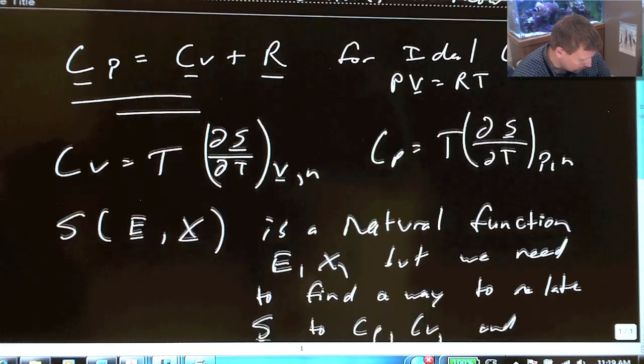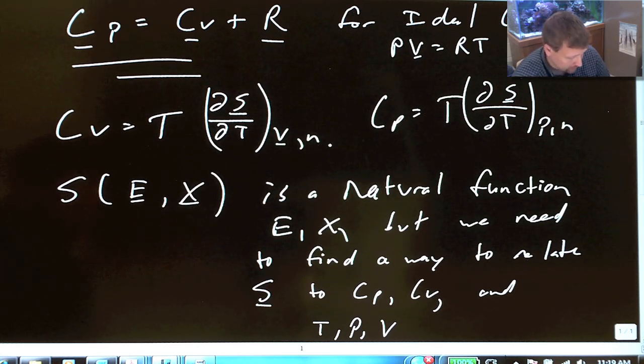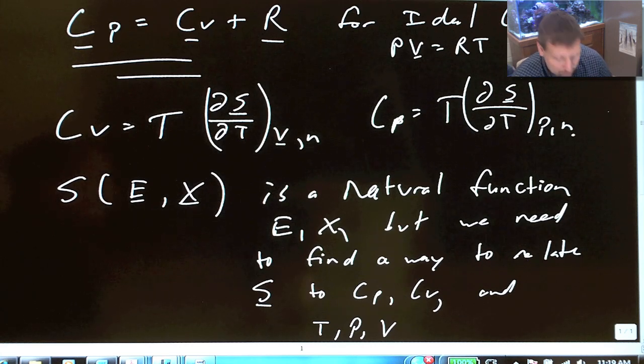According to definition, the constant volume heat capacity, Cv, equals T times partial S partial T at constant volume and number of moles. Similarly, Cp, constant pressure heat capacity, is equal to temperature times partial S partial T at constant P and number of moles.